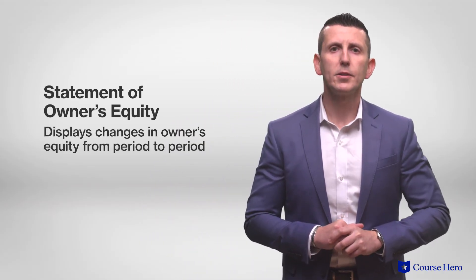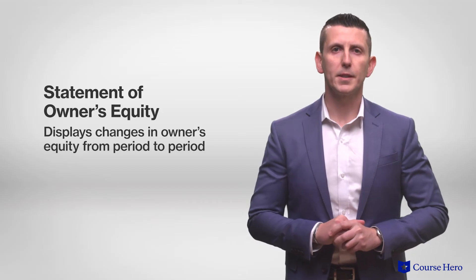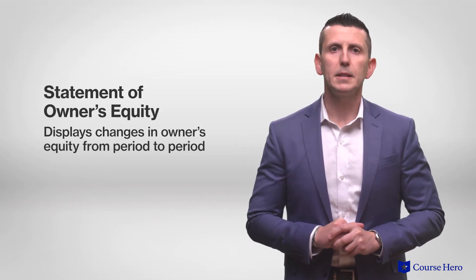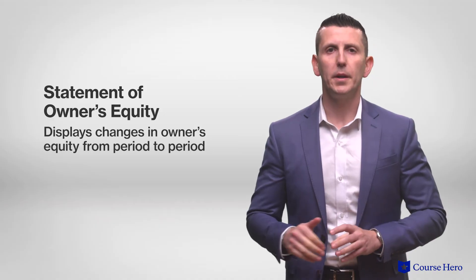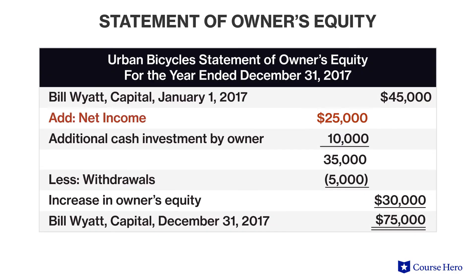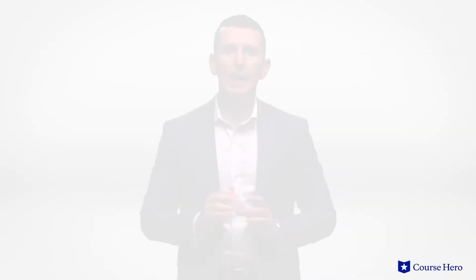Second is the statement of owner's equity, also known as the statement of stockholder's equity. This statement displays changes in owner's equity from period to period. Net income from the income statement plus additional cash investment by the owner, less any withdrawals by the owner, equals the increase or decrease in owner's equity. The ending owner's equity balance then flows to the balance sheet.